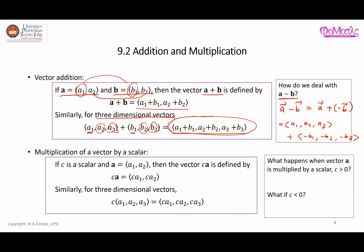Next, let's talk about the multiplication of a vector by a scalar. If c is a scalar and A is a two-dimensional vector, then scalar multiplication is defined by multiplying each component accordingly: c times the first component of A, and c times the second component of A.